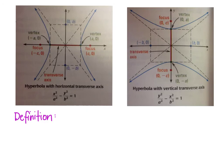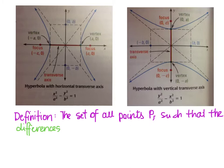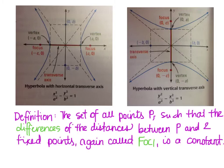Okay, so let's talk about the definition of a hyperbola. A hyperbola is the set of all points P such that the difference of the distances between P and two fixed points, again called foci, is a constant. The line through the foci intersects the hyperbola at the two vertices. So if I draw a line from foci to foci, I intersect at the two vertices. The distance from one vertex to another vertex is called the transverse axis, and the midpoint is the center.